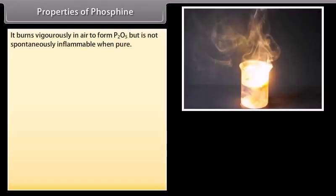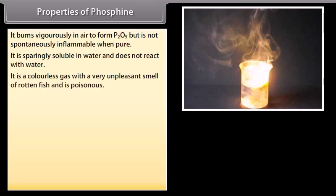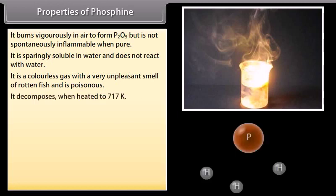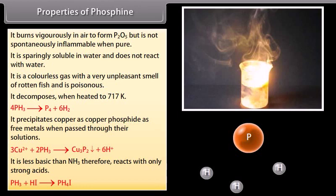Properties of phosphine: It burns vigorously in air to form P2O5 but is not spontaneously inflammable when pure. It is sparingly soluble in water and does not react with water. It is a colourless gas with a very unpleasant smell of rotten fish and is poisonous; it decomposes when heated to 717 K. It precipitates copper as copper phosphide when passed through copper salt solutions. It is less basic than NH3 and therefore reacts only with strong acids.